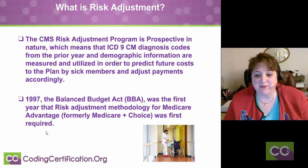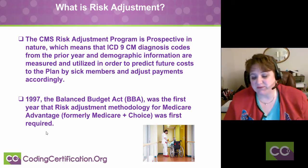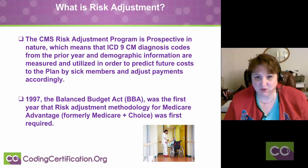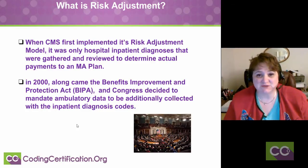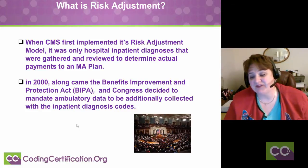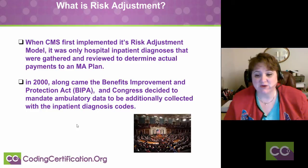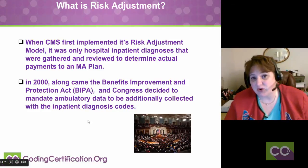In 1997, the Balanced Budget Act was the first year that risk adjustment methodology for Medicare Advantage, formerly Medicare Plus Choice, was first required. When CMS first implemented its risk adjustment model, it was only hospital inpatient diagnoses that were gathered and reviewed to determine actual payments to an MA plan. In 2000, along came the Benefit Improvements and Protection Act, which is BIPA, and Congress decided to mandate ambulatory data to be additionally collected with the inpatient diagnosis codes.